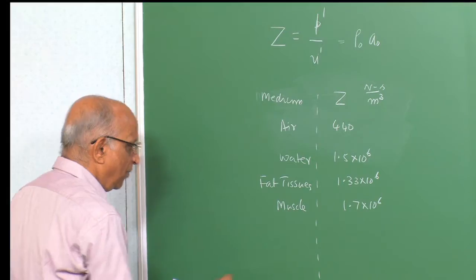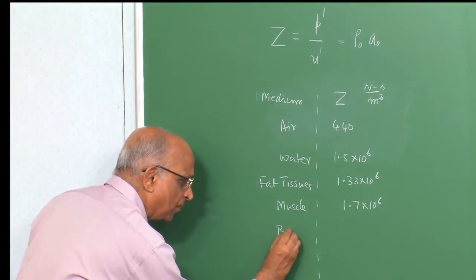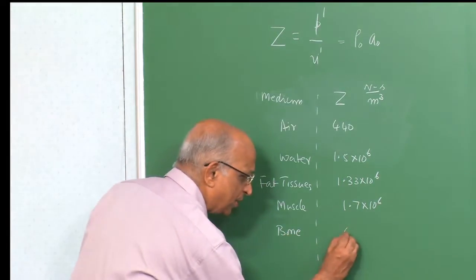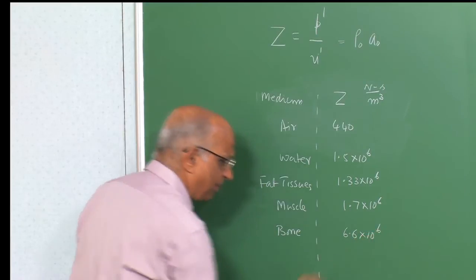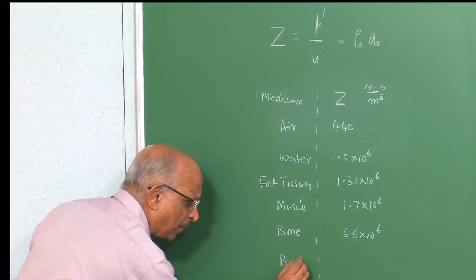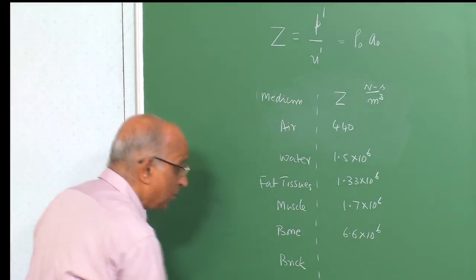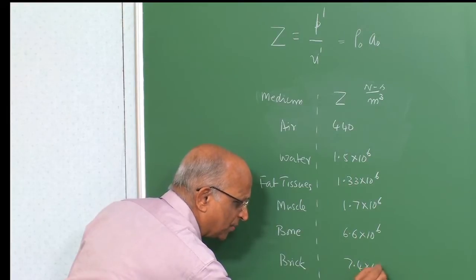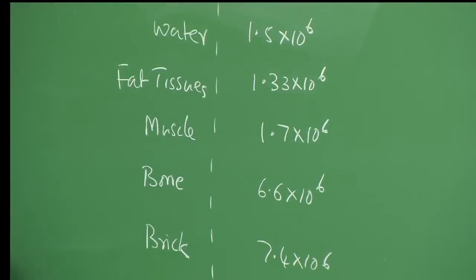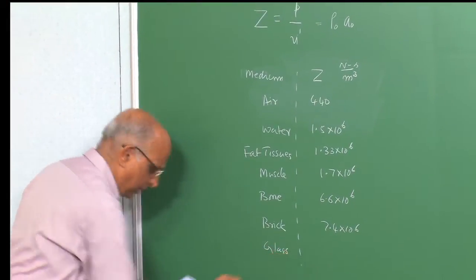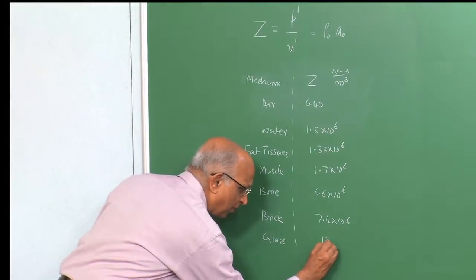For bone in the body, which is something harder, the value is around 6.6 × 10⁶ N·s/m³. For brick used in building, the value is 7.4 × 10⁶. For glass — let us say Pyrex glass — the value is around 13 × 10⁶ N·s/m³.